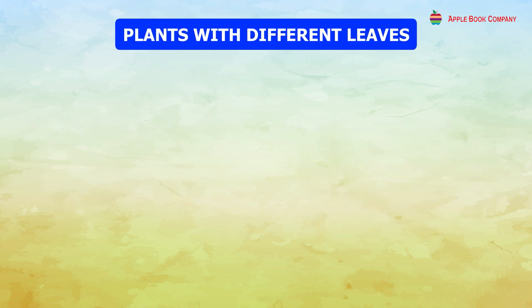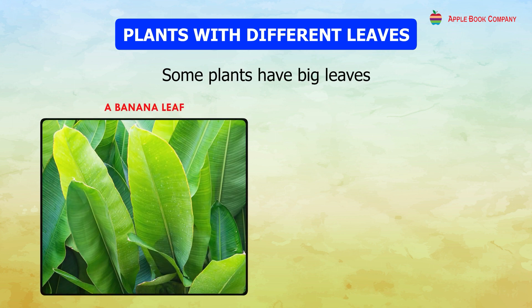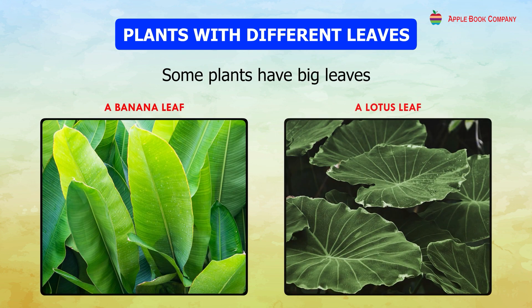Plants have different kinds of leaves. Some plants have big leaves. For example, a banana leaf and a lotus leaf.